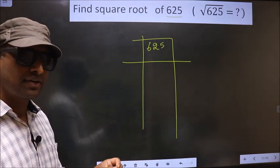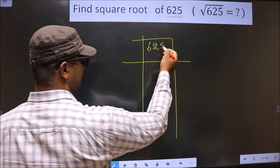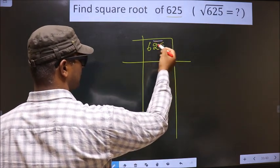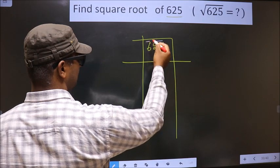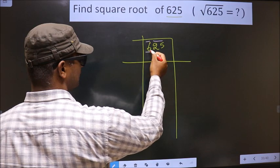Now we should divide the given number into pairs, starting from this side. These two numbers, one pair, here we have only one number. So this will stay alone. Now here we have 6.